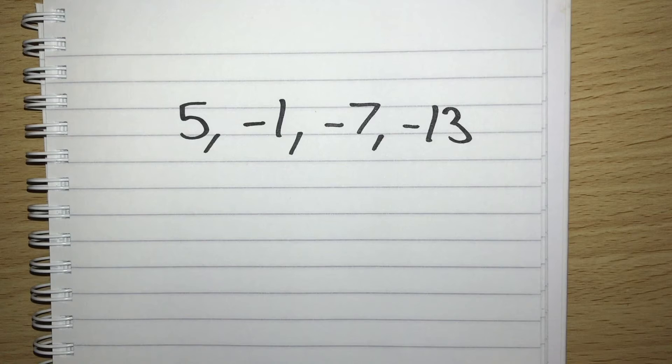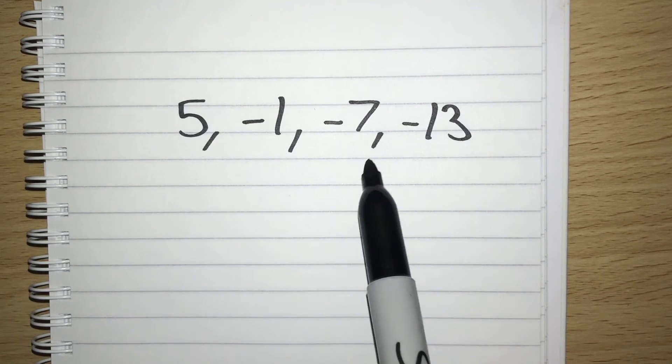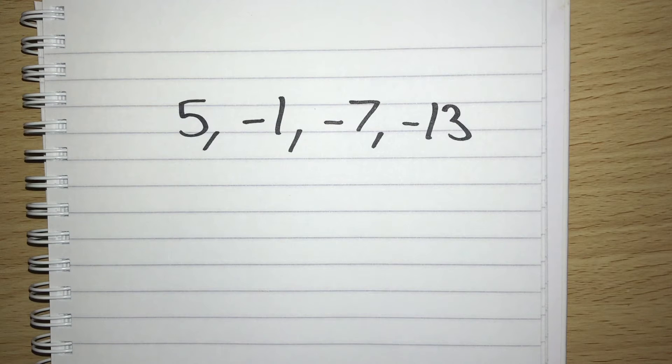Here's an example for you to have a go at yourself. If you just want to pause the video for a moment, the sequence you want to find the nth term of is 5, minus 1, minus 7, minus 13.